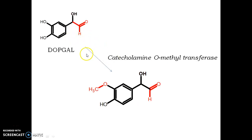The DOPGAL escapes from the neuronal sites into the bloodstream, and in the periphery it is metabolized by another enzyme called catechol O-methyltransferase.